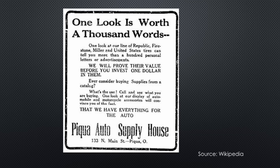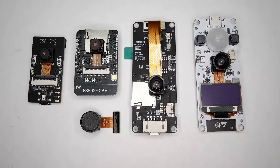A picture says more than a thousand words. This is why the world is moving away from text to images and video. We as makers can profit from this movement, because we get dirt cheap hardware to play with. And if it works with an ESP32, even better. Time for a closer look.